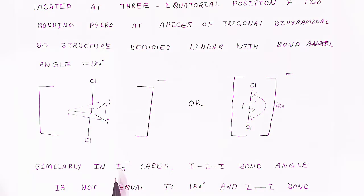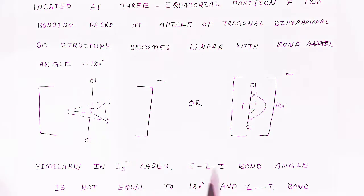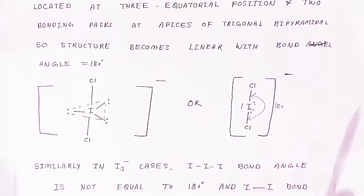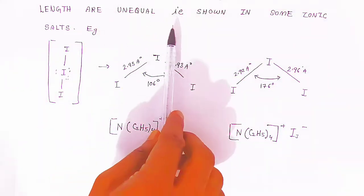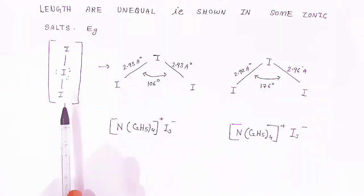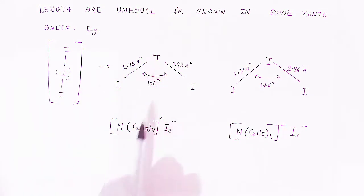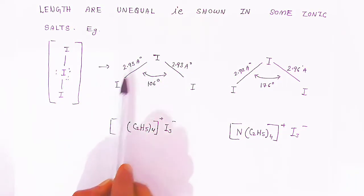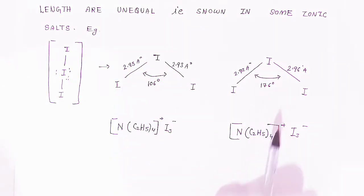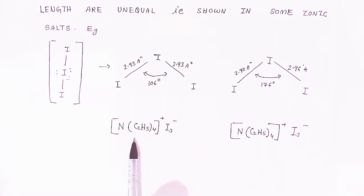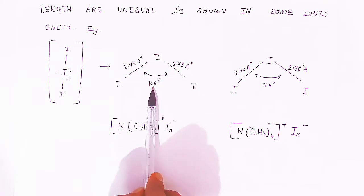Similarly, you can explain the structure of I₃⁻. Here the iodine-iodine bond angle is not exactly 180° because the iodine-iodine bond lengths are unequal, as shown in the same ionic salt. In one ionic salt, the iodine-iodine bond angle is 106°.